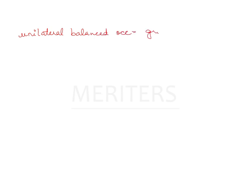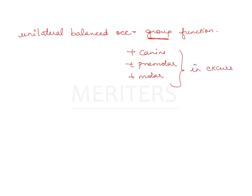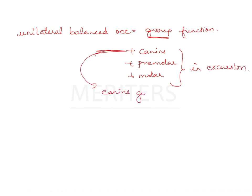Unilateral balanced occlusion is also known as group function occlusion. Group function means more than canine — canine, premolar, and molar — are touching in excursion, meaning side-to-side or protrusive movement. If only the canine is touching, it is canine guided. In natural dentition you could have canine guided on one side and group function on the other, or the same on both sides depending on tooth positioning — that is normal.